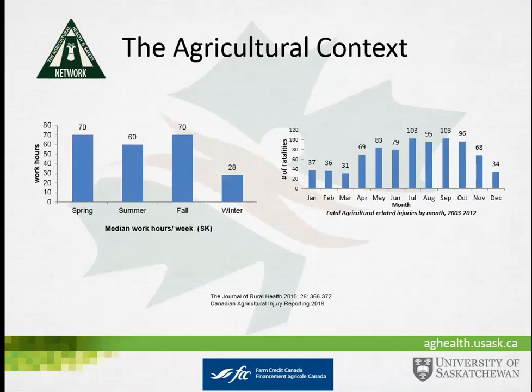In the agricultural world, there's some seasonal variation in the amount of work being done, and that seems to correlate with the amount of accidents occurring. It's also related to long work hours — a 70-hour work week may not all be during the day. For example, during calving season with livestock, a lot of that time may be in the middle of the night and quite disruptive to your sleep, which translates to increases in accidents related to impaired judgment.